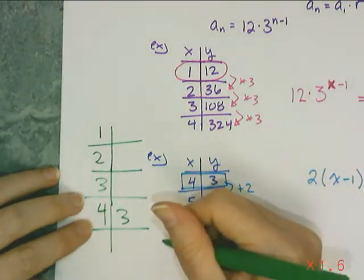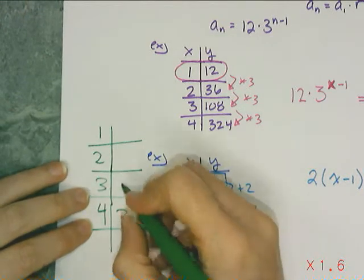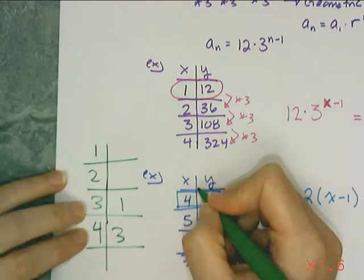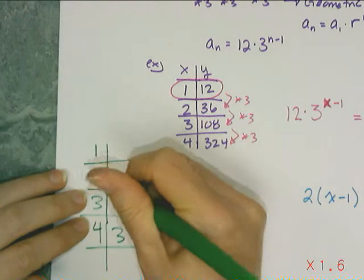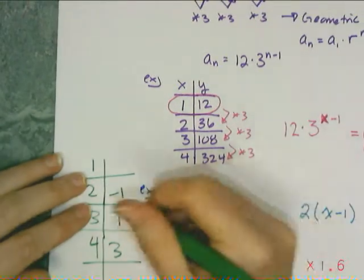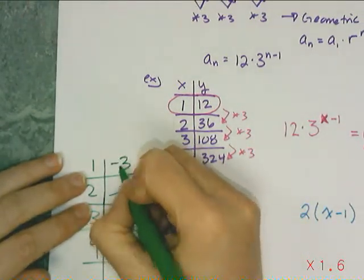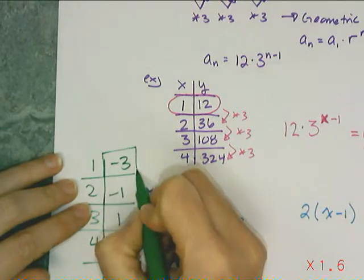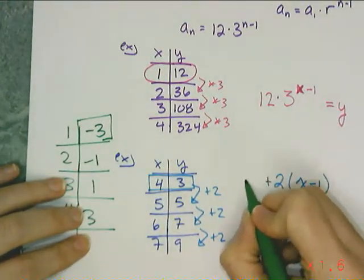So then I go backwards, so I'm not adding 2, I'm going to subtract 2. So 3 minus 2 is 1. 1 minus 2 is negative 1, and then negative 1 minus 2 is negative 3.